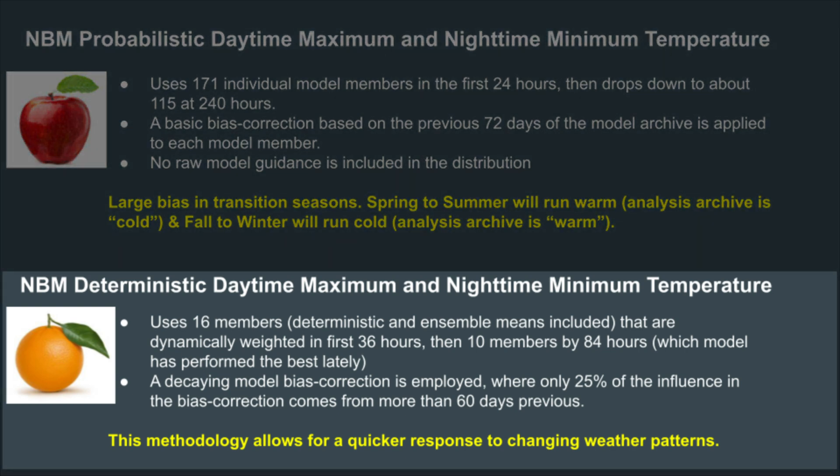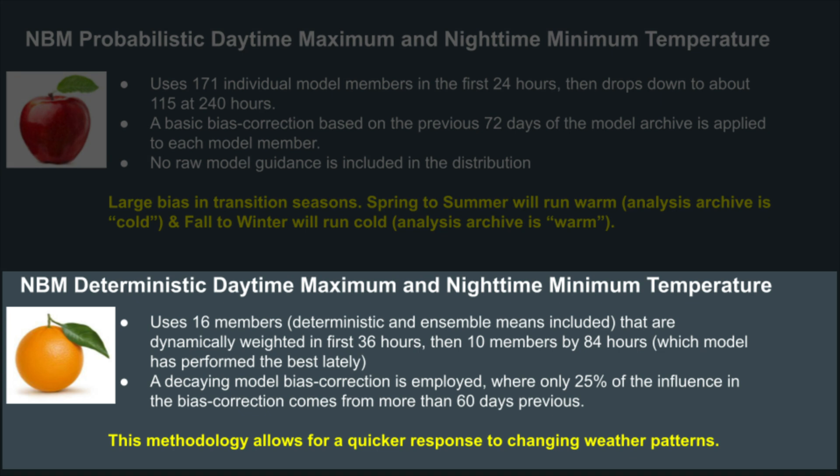The key things to remember are that the deterministic fields have a decaying model bias correction with 60 days prior and a smaller number of members used to create the deterministic values.